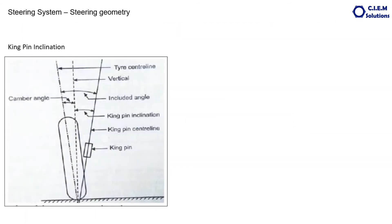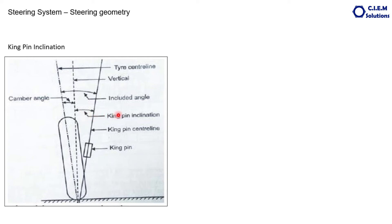The third parameter is the kingpin inclination, viewed from the front side of the vehicle. The caster angle is viewed from the side; kingpin inclination is viewed from the front. The kingpin connects to the tyre through the axle. This is also called axle inclination. In certain cases there is a kingpin; in other cases there are swivel joints, one at the top and one at the bottom. With reference to the vertical straight line, whatever angle exists in the axis of the kingpin or steering axis — that is called the kingpin inclination angle. Kingpin inclination generally ranges from 6 to 14 degrees.